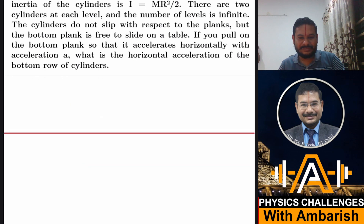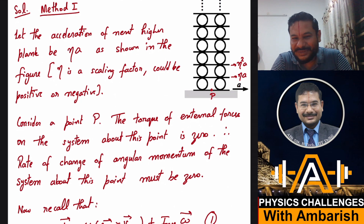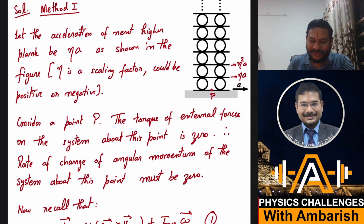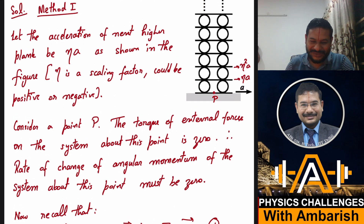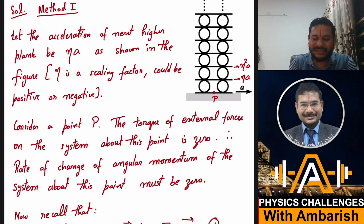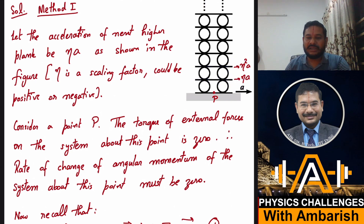Now let me get into the analysis. Method 1 is my method — longer than Mihir's but understandable. By the way, Mihir secured All India Rank 48 in JEE Main and All India Rank 74 in JEE Advanced. In Method 1, the bottom-most plank has acceleration a. Let the acceleration of the next higher plank be ηa, where η is a scaling factor — it could be positive or negative. Since the system is infinite, whatever is happening here, each successive level scales by factor η, which we can deduce using the symmetry of the problem.